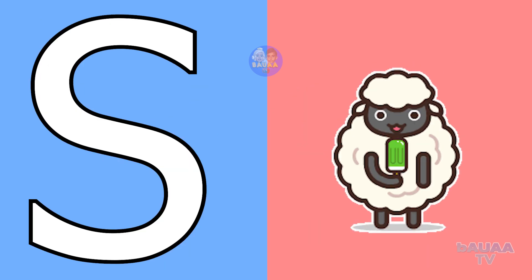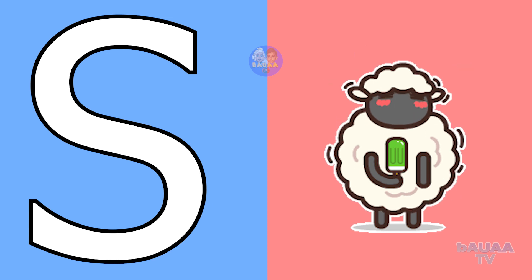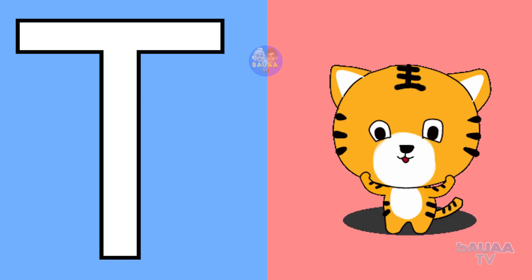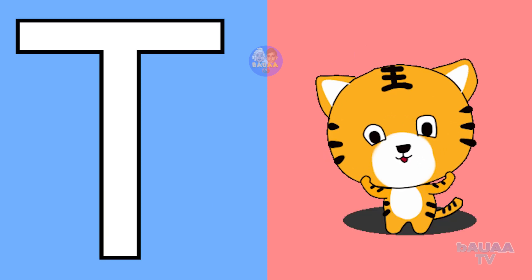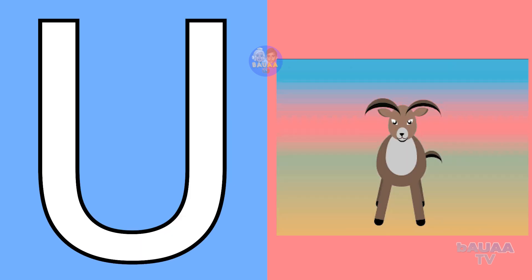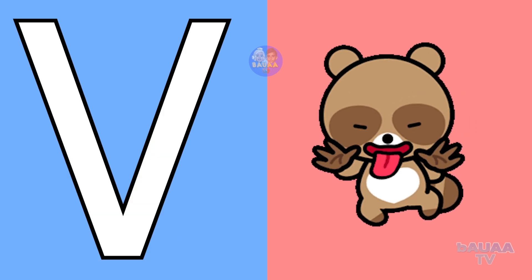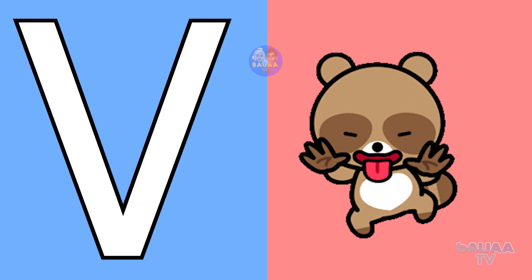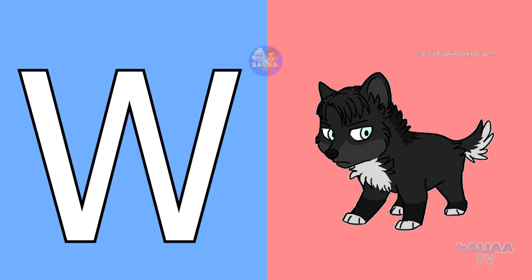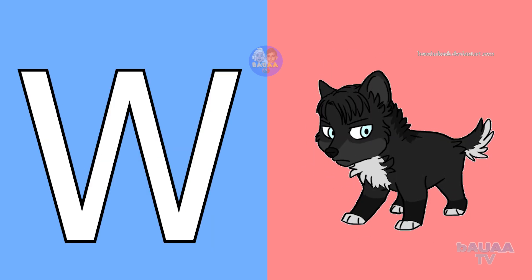S for sheep, T for tiger, U for urial, V for vole, W for wolf.